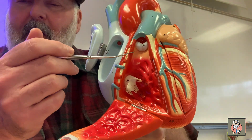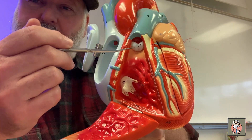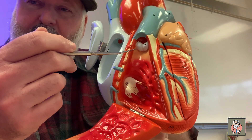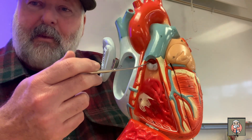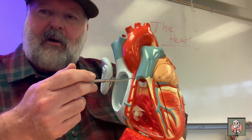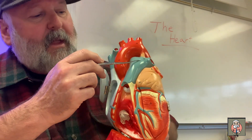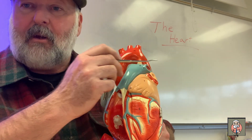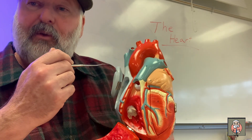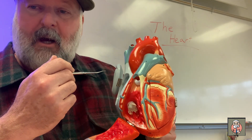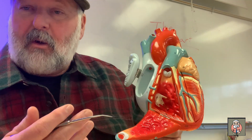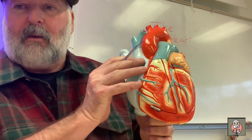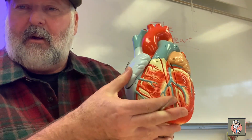When the valve closes and the ventricle contracts, blood exits the right ventricle through the pulmonary valve. From there, blood travels up and splits — some going to the left lung and some to the right lung — where it gets oxygenated.